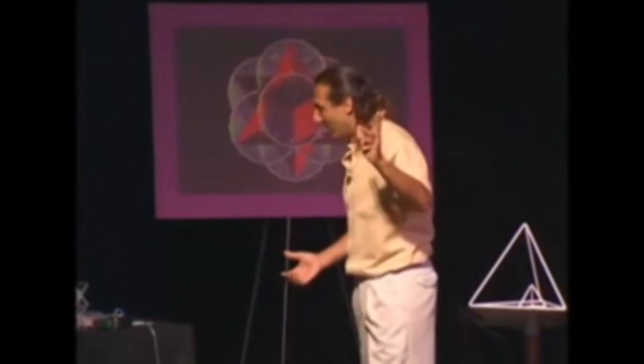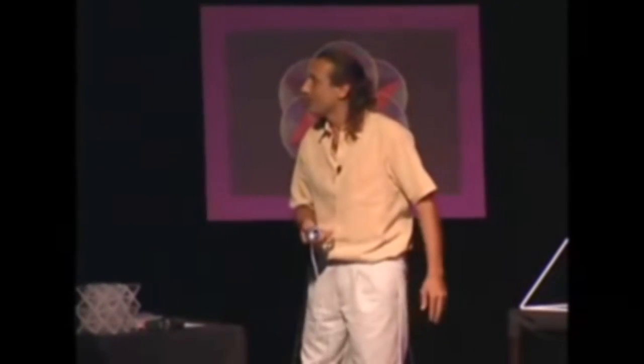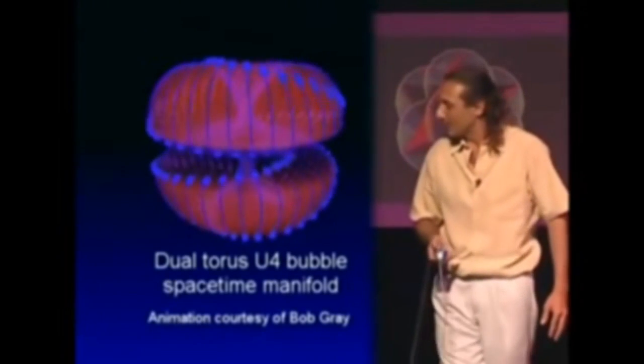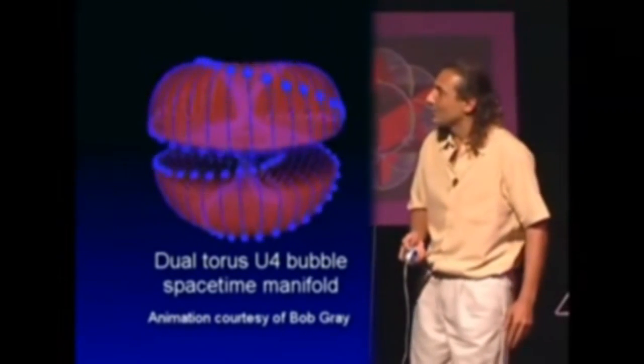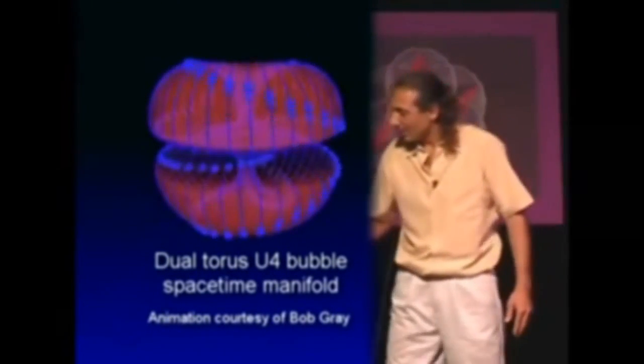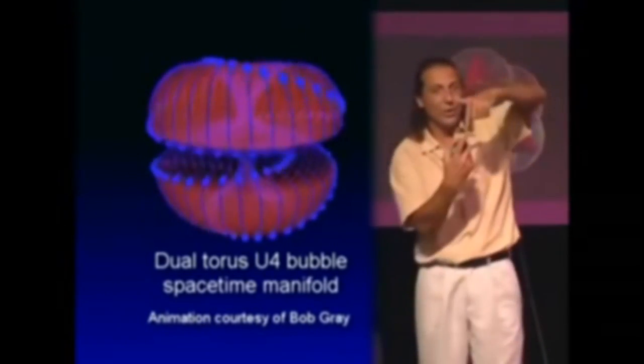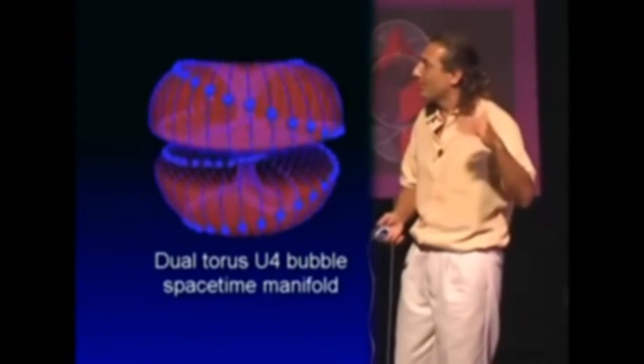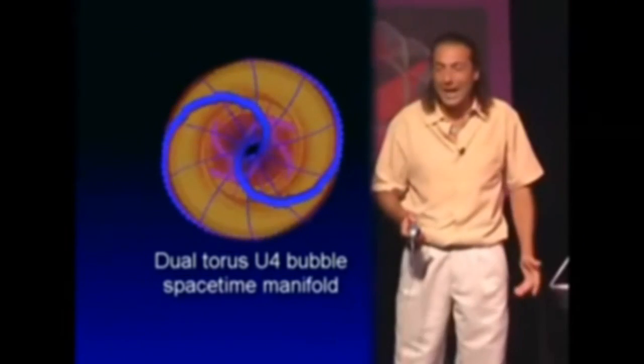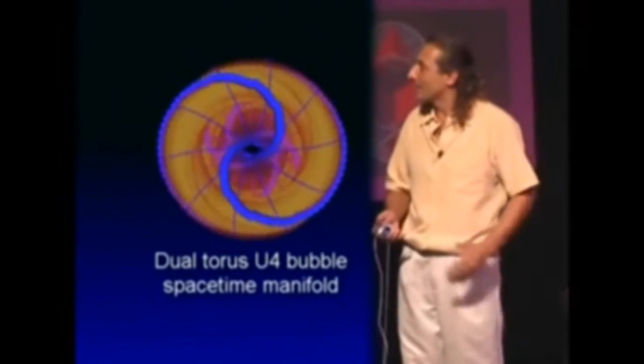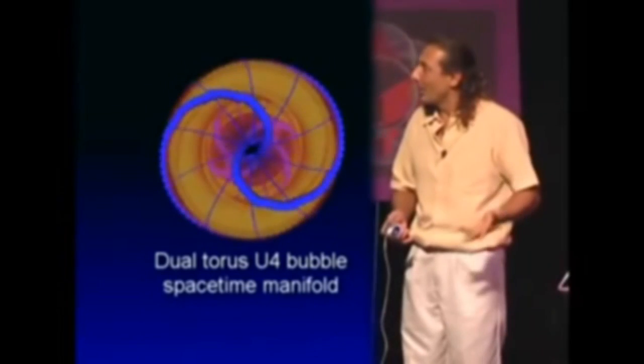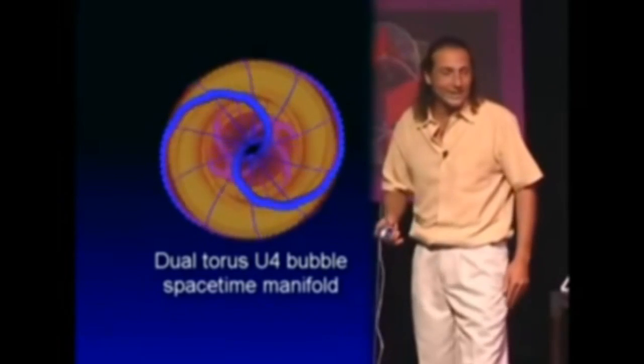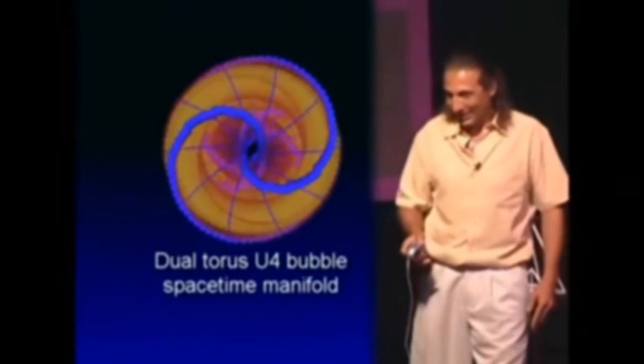So when we add torque to space-time, the solution gives us a very different picture than a perfect sphere. It generates a torus structure, which is a sphere with two holes in the middle at the North and South Pole. The result is a double torus structure, a double torus manifold that has this dynamic, which is viewed here from above as a rotating yin-yang sign.